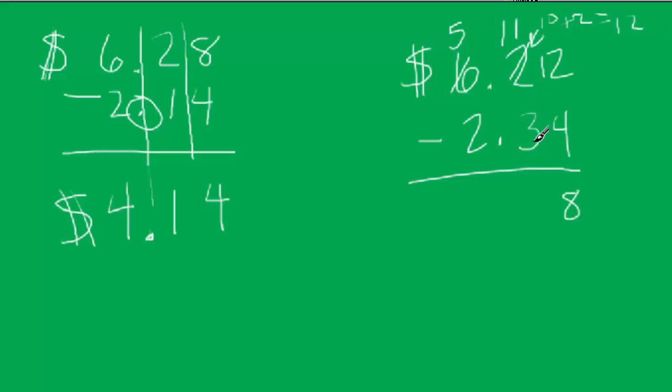So now 11 minus 3 we know is also 8, correct? So now we take our decimal point again, we shoot it down here straight down. So we got 88 cents going, but then we have 5 minus 2. So then we have 3. So basically we've spent $2.34 from our original $6.22 and that leaves us with $3.88.